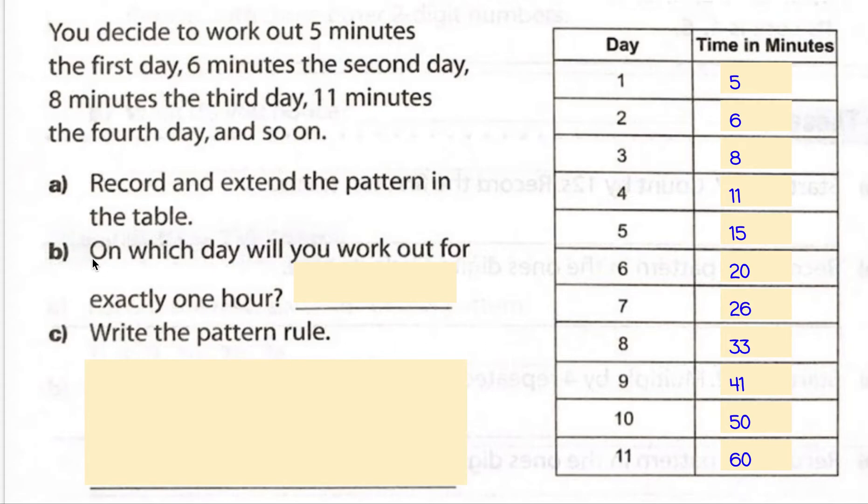Question B says, on which day will you work out for exactly one hour? Well, you need to know how many minutes are in an hour. How many minutes are in an hour? Yeah, sixty, right? So we're looking, when do we work out sixty minutes? And we're on day eleven. And funny enough, this chart goes right up exactly to the sixty. That's not always going to happen, guys. So don't always count on that. So the question is, on which day will you work out for exactly one hour? So I'm going to say day eleven.